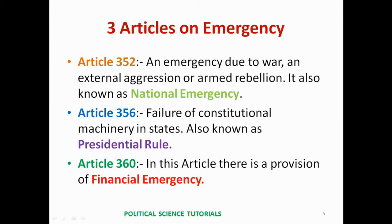There are three articles on emergency. Article 352 deals with emergency due to war, external aggression, or armed rebellion — also known as National Emergency. Article 356 deals with failure of constitutional machinery in states. Article 360 deals with financial emergency.